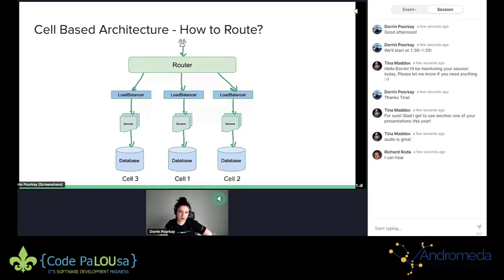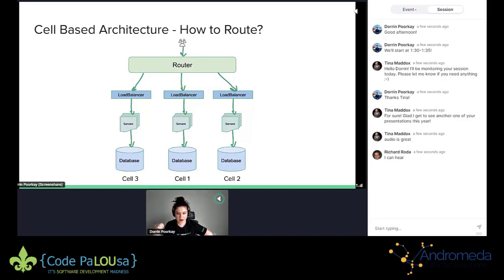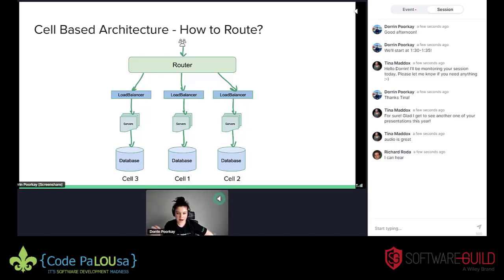You might wonder: I have this cell-based architecture and this router layer — how do I route? How does that look? That router is essentially a control plane, and it should be architected as simply as possible. You can route in many different ways.